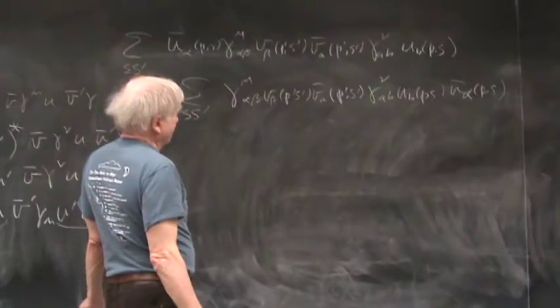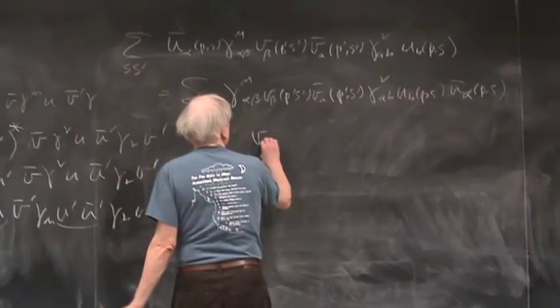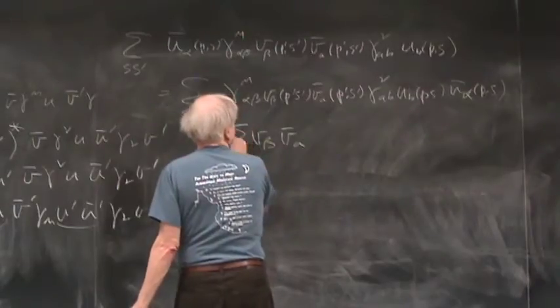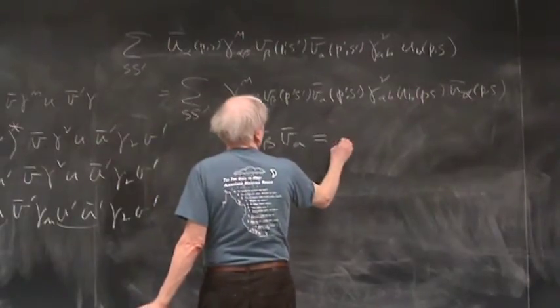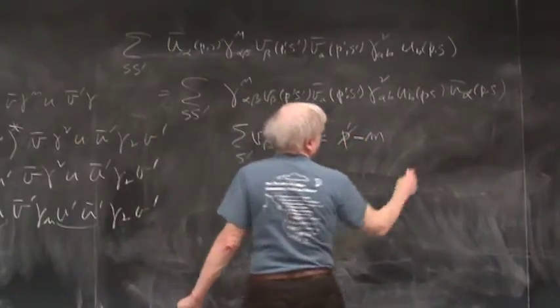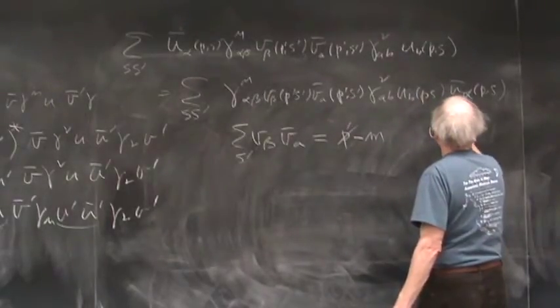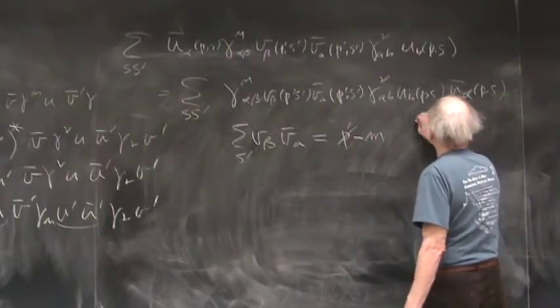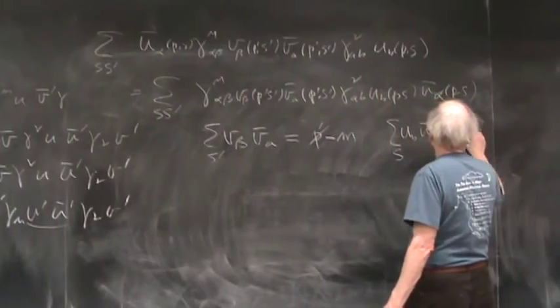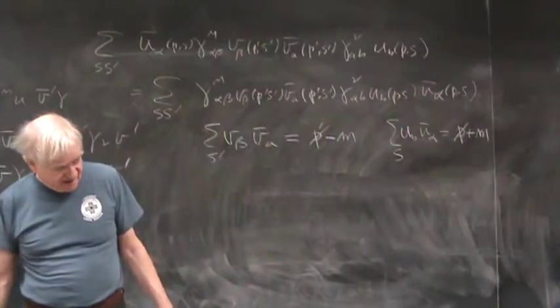We have ū_α(p,s) (γ^μ)_αβ v_β(p', s'), v̄_a(p', s') (γ^ν)_ab u_b(p,s). And we're summing over s and s'. But before doing that, well we are doing that. This is (γ^μ)_αβ v_β(p', s') v̄_a(p', s') (γ^ν)_ab u_b(p,s) ū_α(p,s).